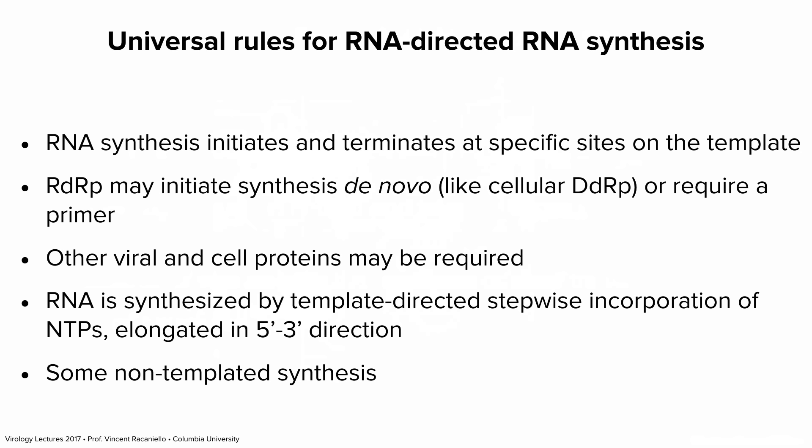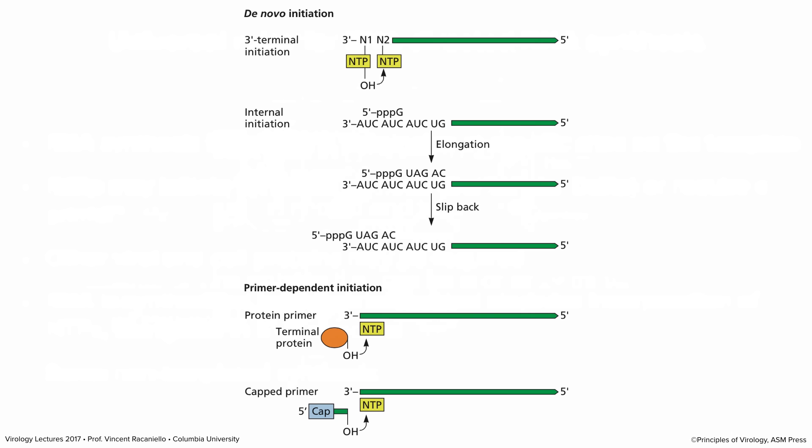Besides the RNA-dependent RNA polymerase, other viral proteins and sometimes even cellular proteins are needed to make viral RNA. RNA is made by template-directed stepwise incorporation of NTPs, elongated in a 5' to 3' direction. There are rare examples of non-templated synthesis — where the polymerase is not copying a template but just inserting extra bases not coded for — but mostly it's templated synthesis.